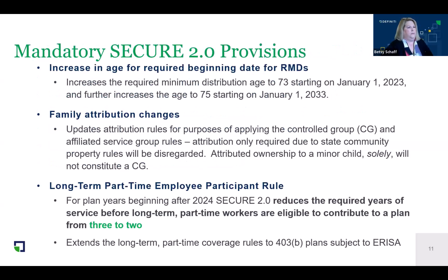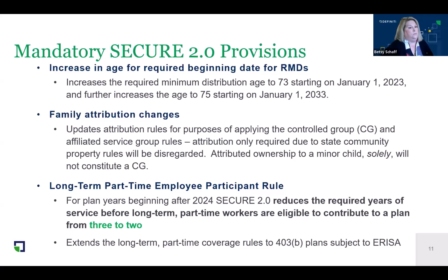There are some mandatory provisions in SECURE 2.0. SECURE 2.0 is increasing the age for required minimum distributions. It used to be 70.5, then went up to 72, and now it's 73 starting January 1st, 2023. It's going to continue to increase until we get to age 75 starting January 1st, 2033.